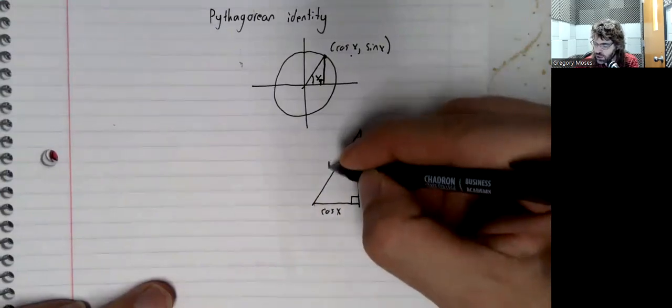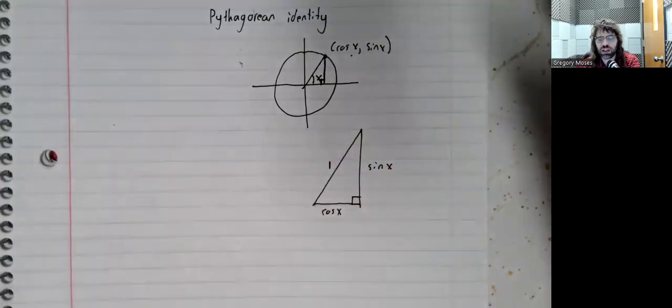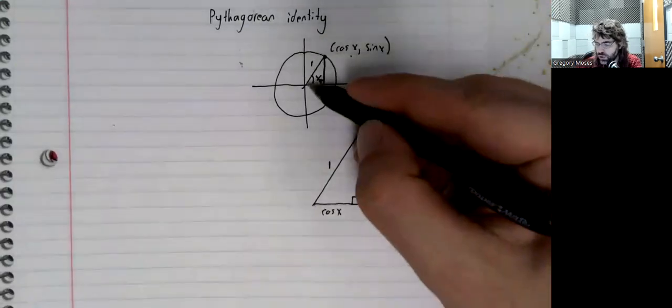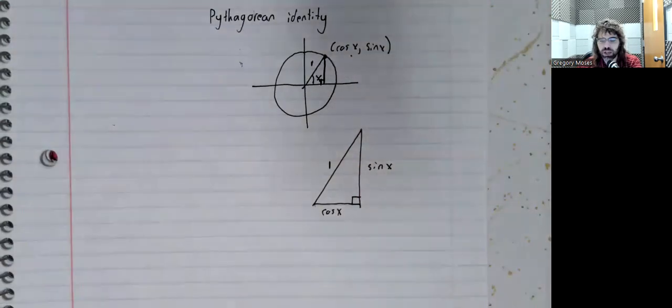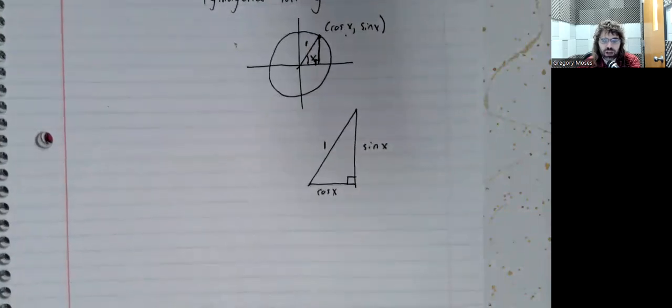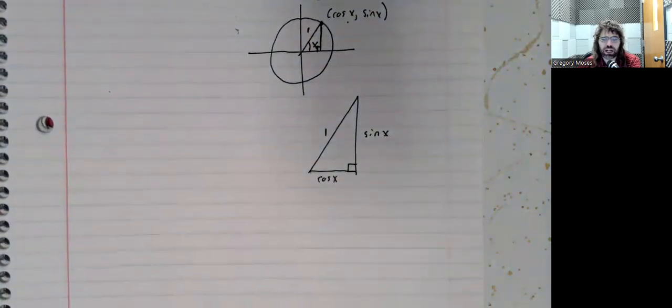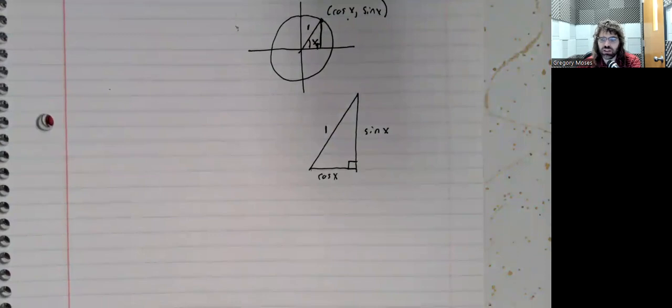The hypotenuse is one, because this hypotenuse is a radius of the unit circle. And the unit circle has radius one, and the Pythagorean identity is then right from the Pythagorean theorem.